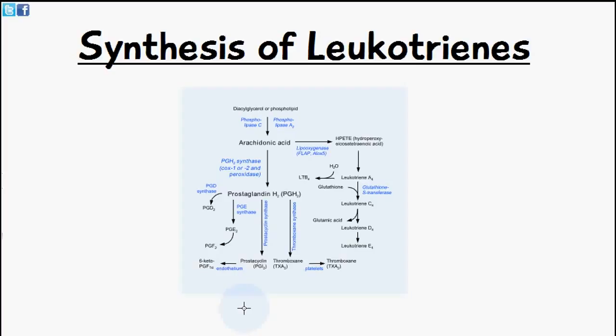So we begin with arachidonic acid, and this arachidonic acid is converted into a number of linear hydroperoxy acids by a pathway which involves lipoxygenases.